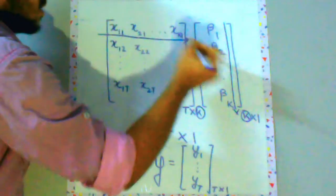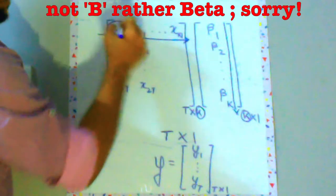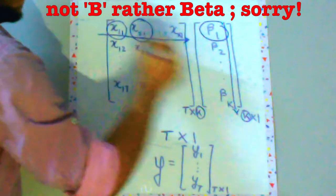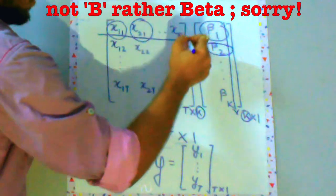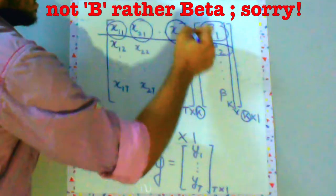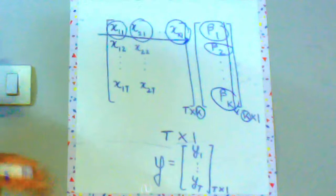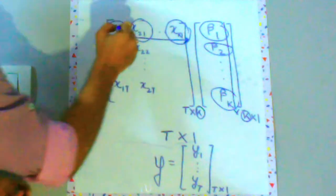So if you get this row and this column x11 into b1 x21 into b2 and so on. In the last we will have xk1 into bk. Now if you recall these x11, x12, x1t values are just 1 1 1 1 1 1.